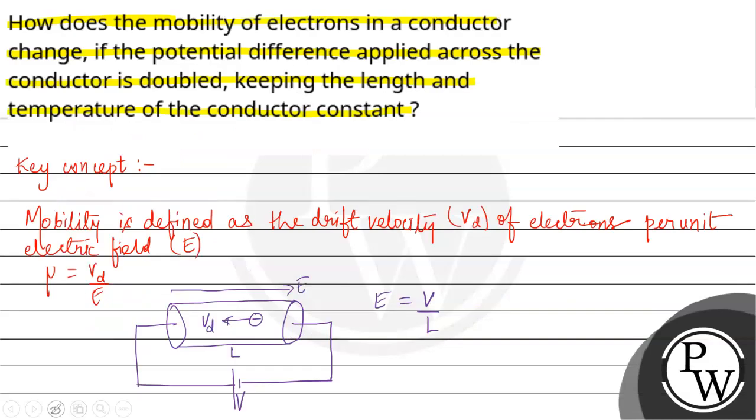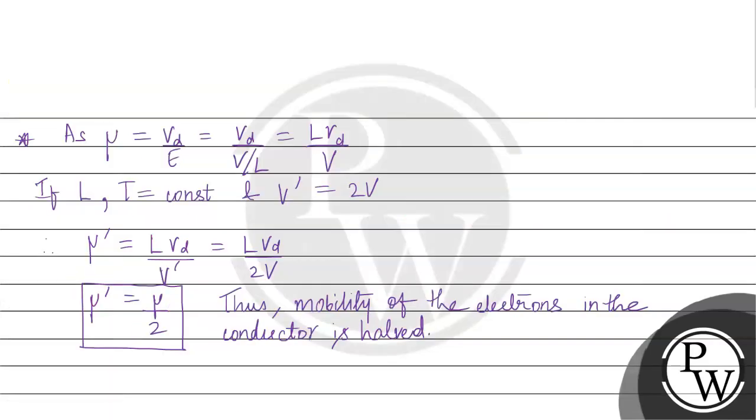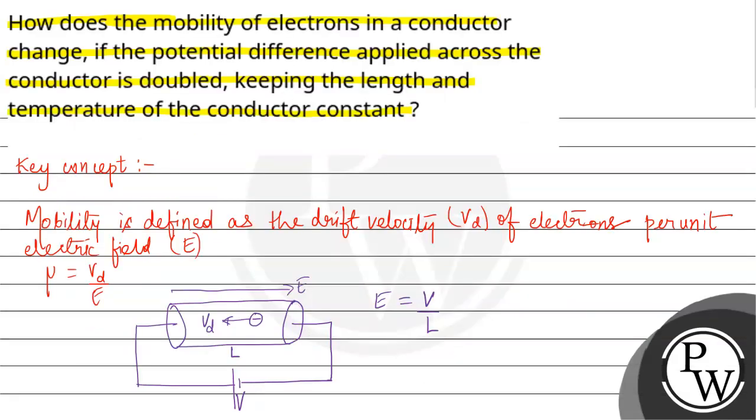So in this way, the final answer for the given question is: mobility of the electrons in the conductor is halved. Hope you understand it well. All the best.